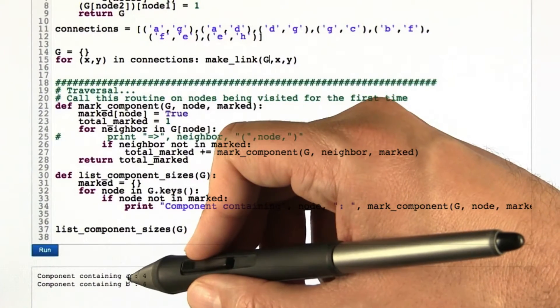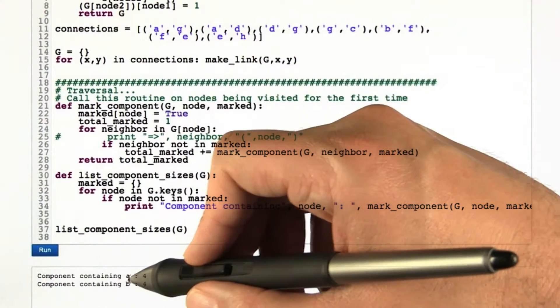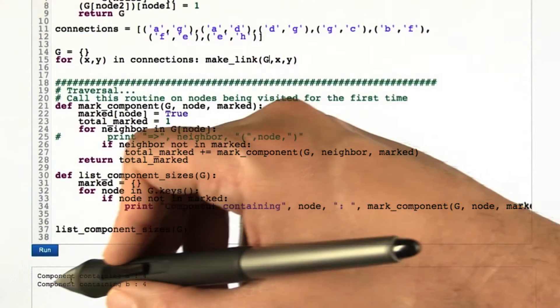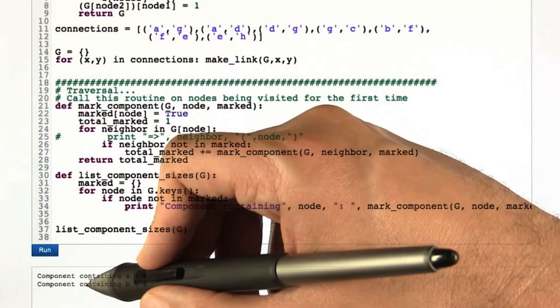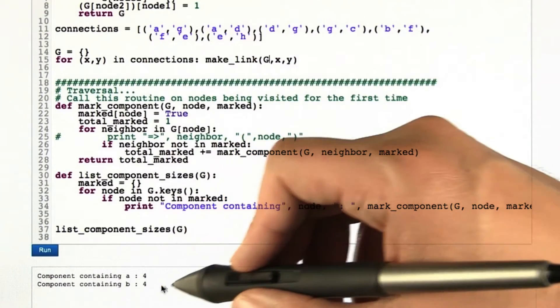It goes through and identifies that there's two components. One we'll just name little a because it contains node little a. It has four nodes in it and then there's a separate component that's not connected to the first one that contains b and that also has four nodes.